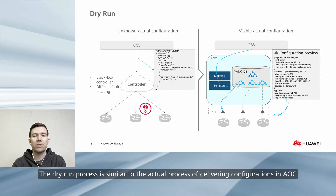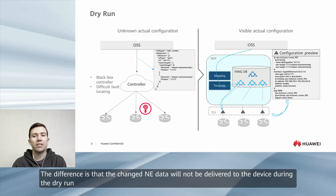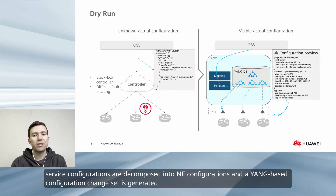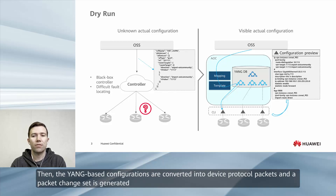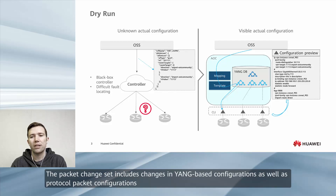The dry run process is similar to the actual process of delivering configurations in AOC. The difference is that the changed YANG data will not be delivered to the device during the dry run. During a dry run, service configurations are decomposed into YANG configurations and a YANG-based configuration change set is generated. Then the YANG-based configurations are converted into device protocol packets and a packet change set is generated. The packet change set includes changes in YANG-based configurations as well as protocol packet configurations.